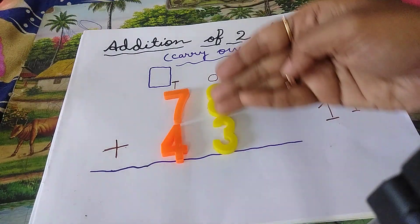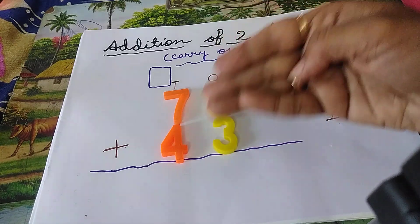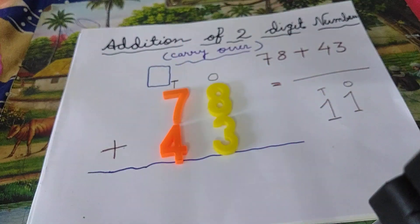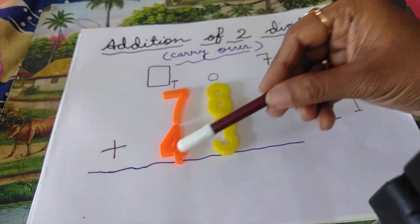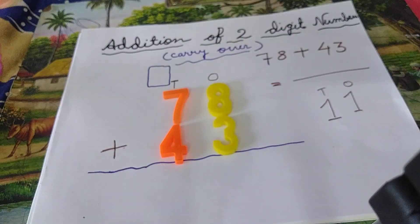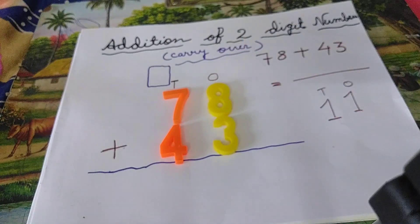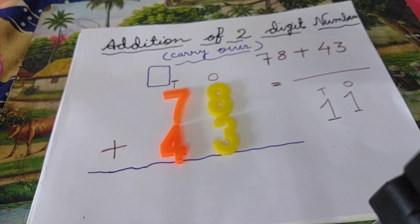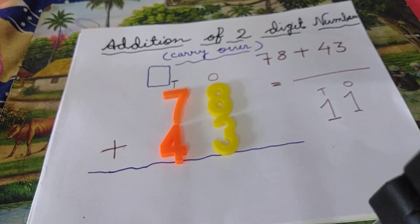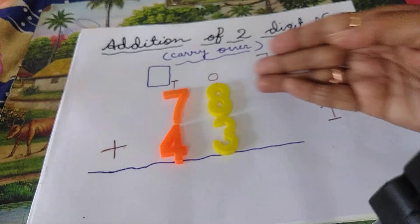This is the 1's column. This is the 10's column. This is the 1's column. This is the 10's column. Now start adding. Children, remember when you perform addition, start from your right side.